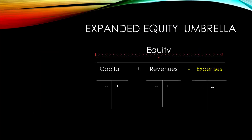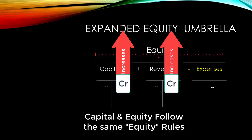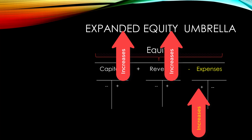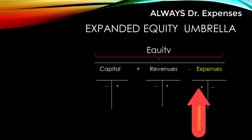Now let's take a look at the expanded equity umbrella. Recall that capital investments made the equity umbrella go up and revenues made the equity umbrella go up, but expenses cause the equity umbrella to go down. So expenses are the opposite of the other two accounts under the equity umbrella. Expenses are always debited — they can only go one way, which is up, so always debit expenses.